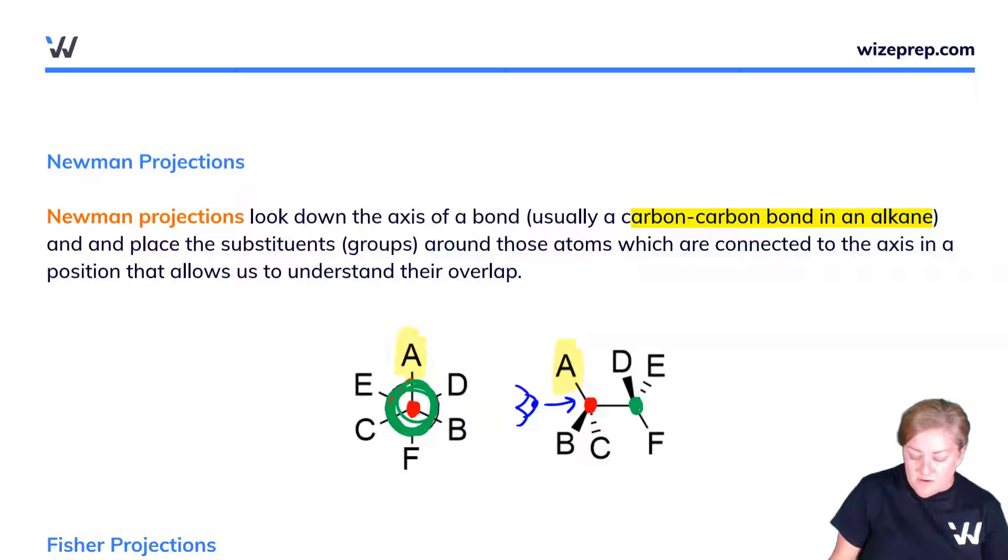I work through each of the different groups: group A as I'm staring at the red carbon is up; group B is out of the page, so if I'm staring down this bond it's on my right; and group C is behind the page, so it's on my left. As I go to the back, I look at group F which is pointed down.